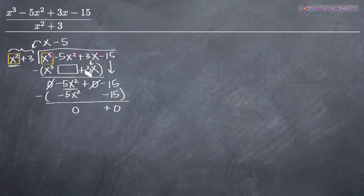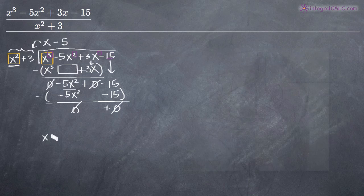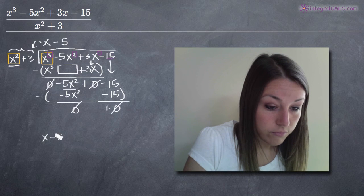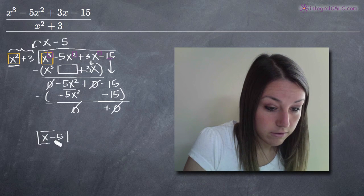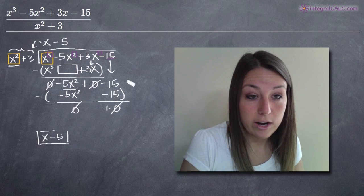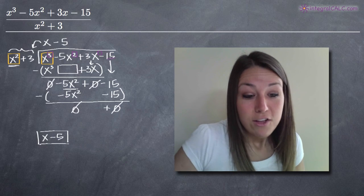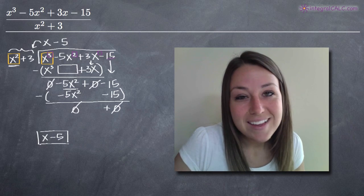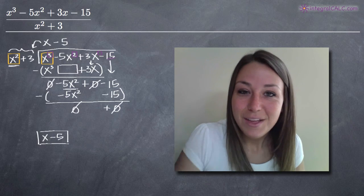So this function happened to divide perfectly. We didn't have any kind of remainder, just zeros at the bottom. So the final answer here is x minus 5. The denominator divided perfectly into the numerator of our rational function. I hope that video helped you guys and I will see you in the next one. Bye!